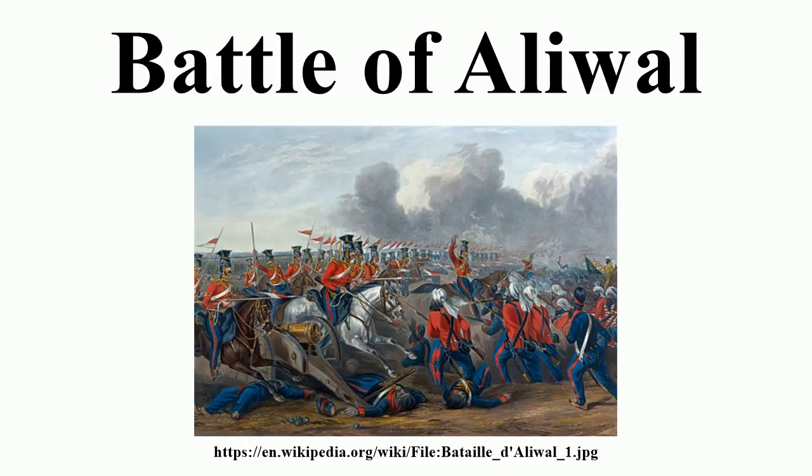Hardinge sought to relieve Gough of his command, blaming his tactics for the heavy casualties. The Sikhs, too, were temporarily disheartened by the retreats ordered by their commanders. However, they were reinforced by troops who had not yet seen action, and moved back across the Sutlej to occupy a bridgehead at Sobraon.